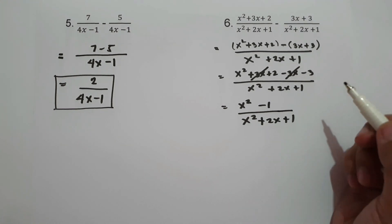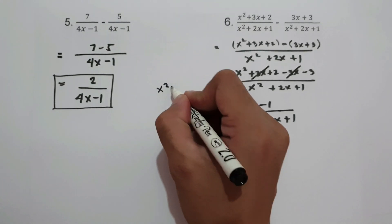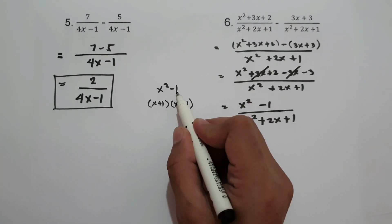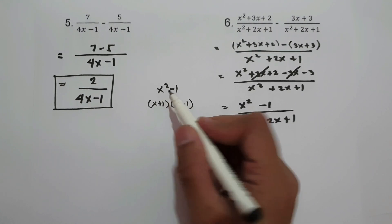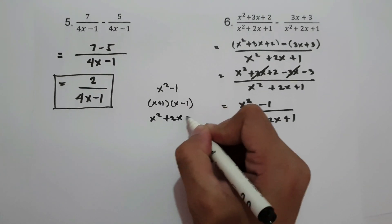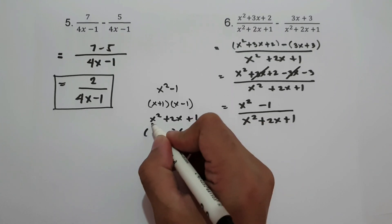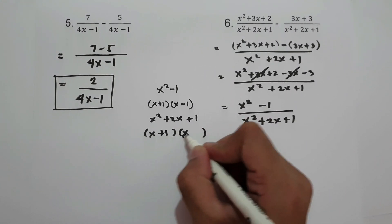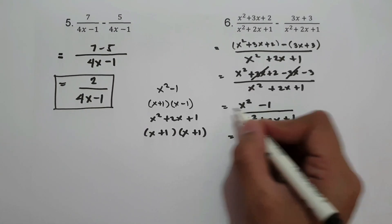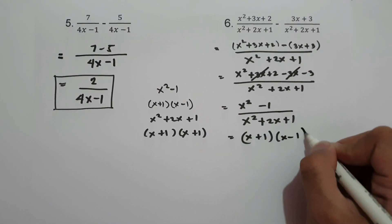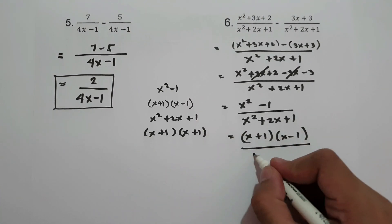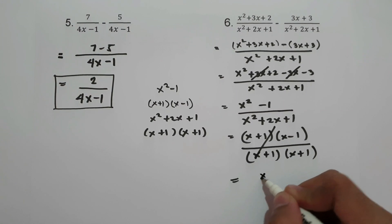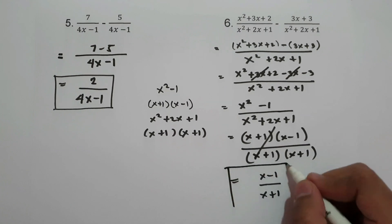To simplify, we find the factors of numerator and denominator. For x squared minus 1: the factors are (x plus 1) and (x minus 1), since 1 times negative 1 is negative 1 and they add to 0. For x squared plus 2x plus 1: the two numbers that multiply to 1 and add to 2 are both 1, so the factors are (x plus 1) and (x plus 1). Writing (x plus 1)(x minus 1) over (x plus 1)(x plus 1), we cancel one (x plus 1). Therefore, our final answer is (x minus 1) over (x plus 1).